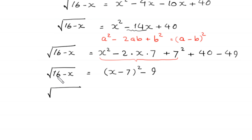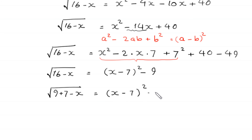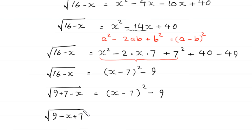So the square root of (16 minus x) is equal to (x minus 7) squared minus 9. We can write 16 as 9 plus 7, so the left side becomes the square root of (9 plus 7 minus x). Rearranging, we get the square root of (9 minus (x minus 7)) is equal to (x minus 7) squared minus 9.